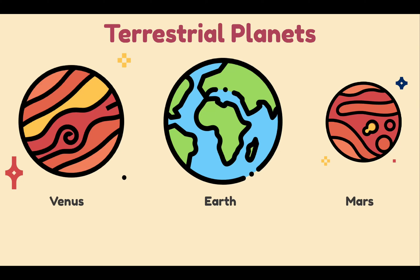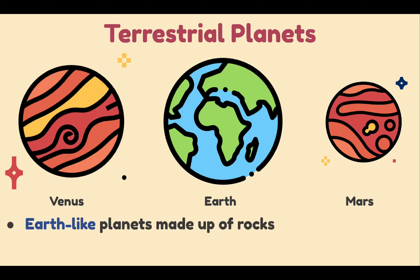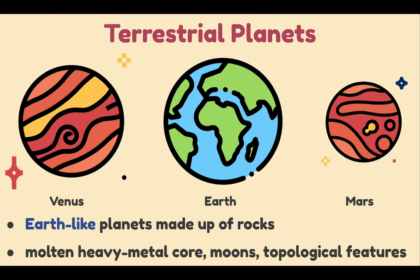This slide shows three of the four terrestrial planets in our solar system: Venus, Earth, and Mars — and the other one is Mercury. Terrestrial planets are Earth-like planets made up of rocks or metals with a hard surface, which is why they are also called rocky planets. Terrestrial planets also have a molten heavy core, few moons, and topological features such as valleys, volcanoes, and craters.